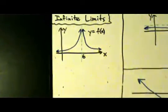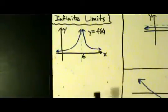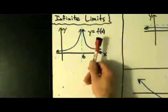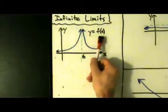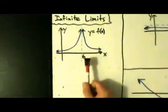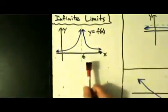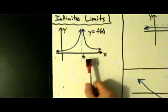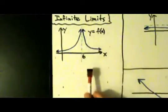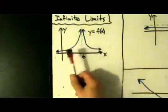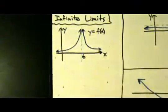So that'll happen if you've got a function like here, y equals f of x. Notice we have a vertical asymptote at x equals 6. So if you've got a vertical asymptote, you're probably going to have some infinite limits there.